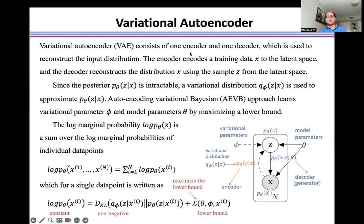Variational autoencoder consists of one encoder and one decoder, which is used to reconstruct the input distribution.